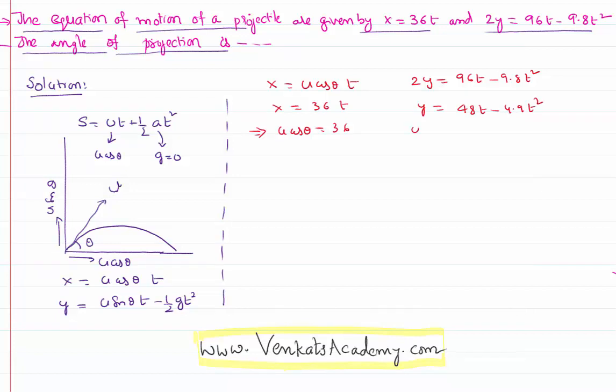Comparing this with the standard equation y equal to u sin theta into t minus half g t square. It is very clear that u sin theta is 48.